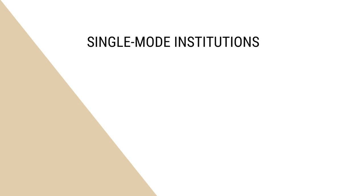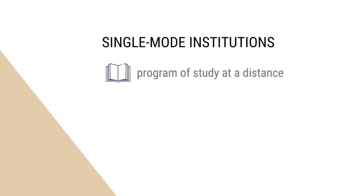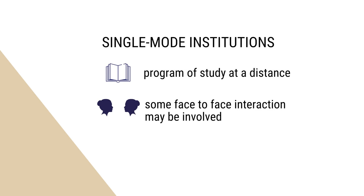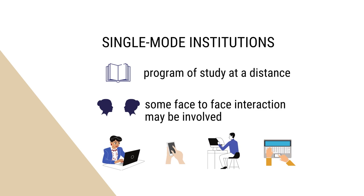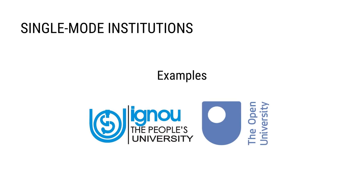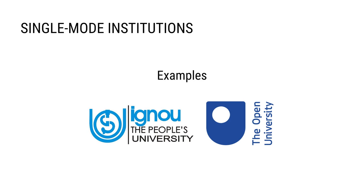Single mode institutions are set up to offer courses and programs of study at a distance. Some face-to-face interaction may be involved but it is on an optional basis. The teaching and learning processes are mediated in a specific way — this may be in print including correspondence, by audio, video, teleconferencing facilities, video conference, or through computer or internet-based facilities. Many of the mega universities of the world function as single mode universities. Two examples are Indira Gandhi National Open University and the United Kingdom Open University.